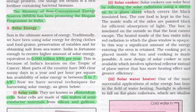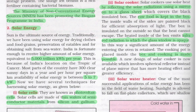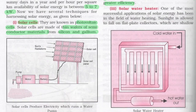Solar cookers use solar heat by reflecting solar radiation using a mirror onto a glass sheet that covers a black insulated box. The inner walls of the box are painted black to absorb maximum heat energy and not allow heat to escape. The heated box emits infrared radiation, to which the glass window is opaque, retaining the energy inside, making cooking possible. A new design uses a spherical reflector instead of a plane mirror, giving greater heating effect and efficiency.